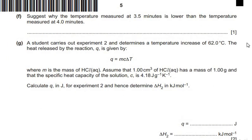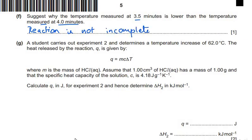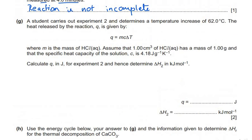Sub-question: suggest why the temperature measured at 3.5 minutes is lower than at 4 minutes. The reason is that the reaction is not yet complete at 3.5 minutes — the reaction is still ongoing, so the temperature continues to increase. That is why the temperature at 3.5 minutes is lower than at 4 minutes.